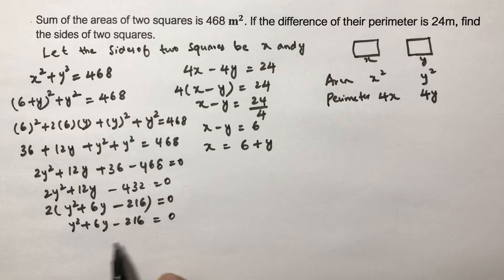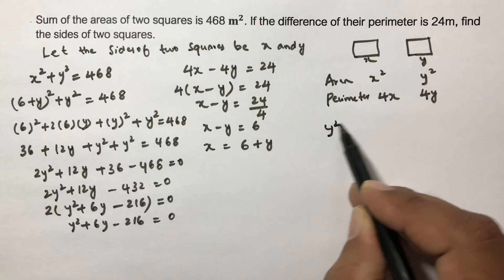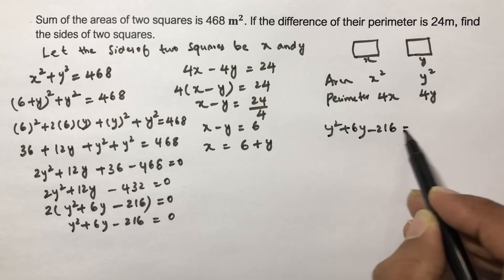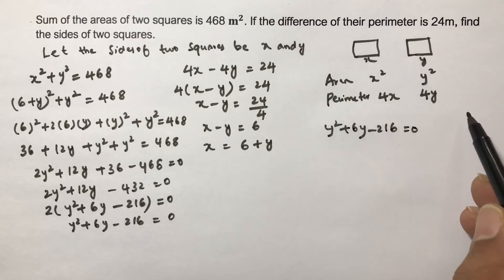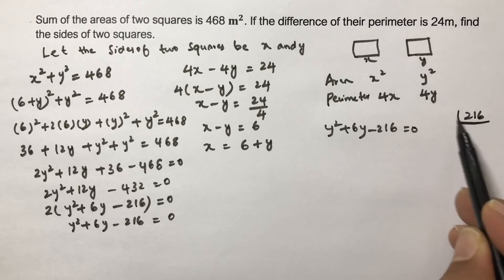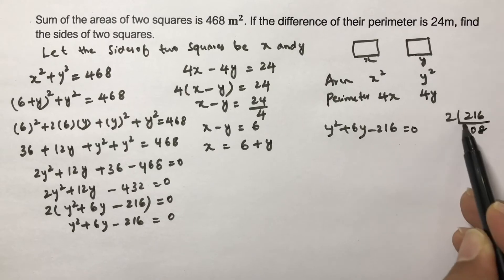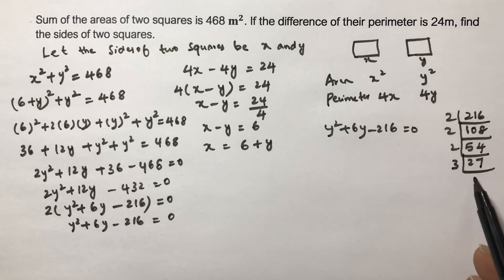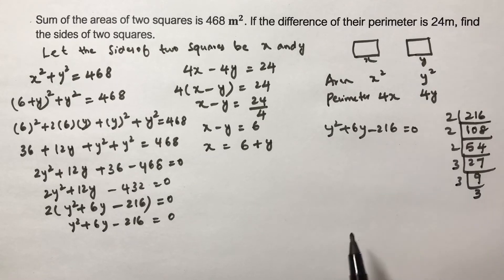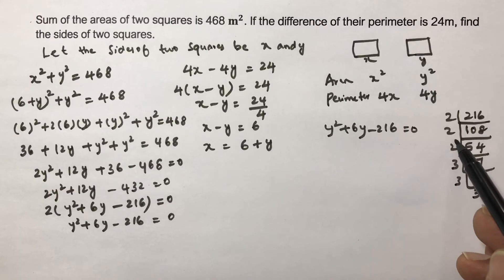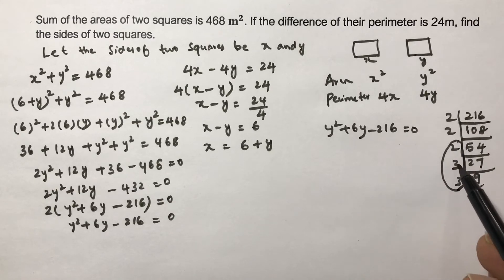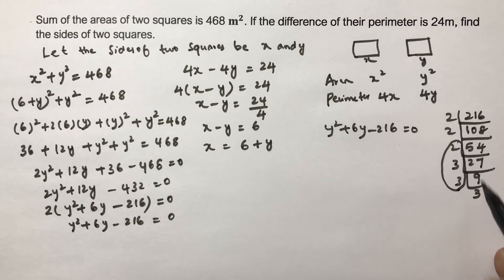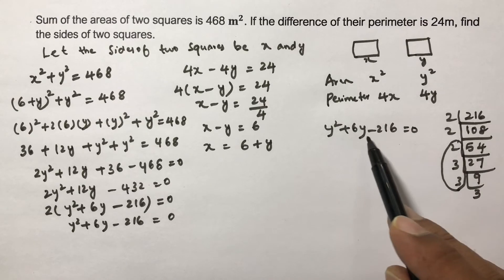To factorize y² + 6y − 216, we find factors of 216: 2×108, 2×54, 2×27, 3×9, 3×3. Choosing 18 and 12, since 18 − 12 = 6, these are the required factors.